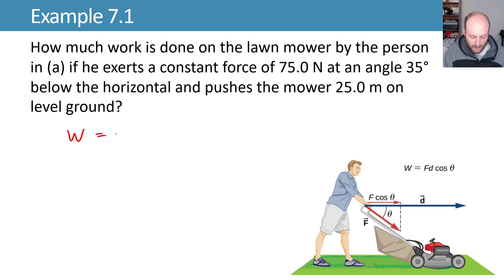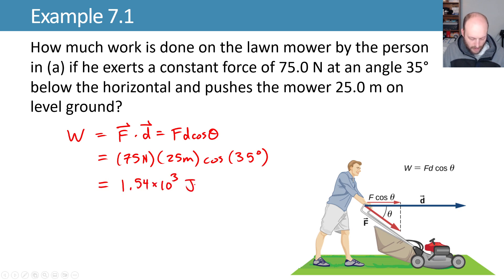That is F dot d or Fd cosine theta, where our force is 75 newtons, our distance is 25 meters, and the angle between them, this angle theta, gives us that cosine of that angle theta. We evaluate that and get 1.54 times 10 to the third joules, or I might be tempted to write that as 1.54 kilojoules worth of work.